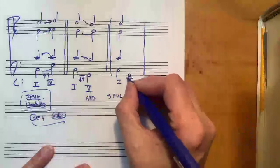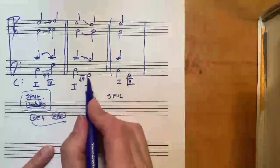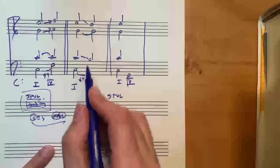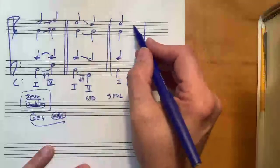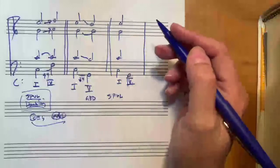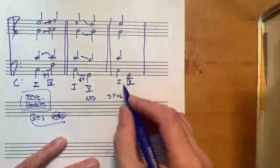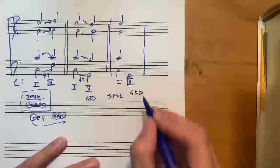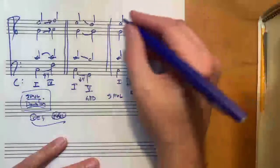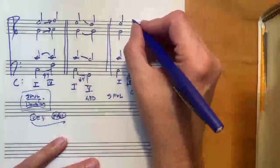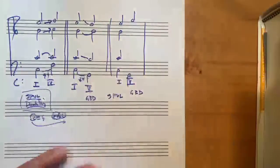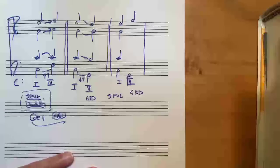In this one, when we did the smoothest possible voice leading, E led to D. Let's take this E to a different chord tone. So we have G, B, D. Let's take this E to G. What if our melody did that? What does that do for the rest of our voicing?